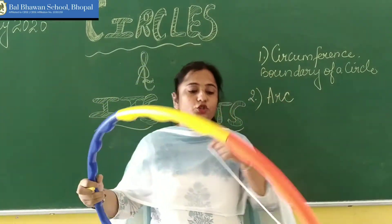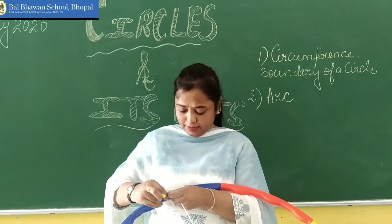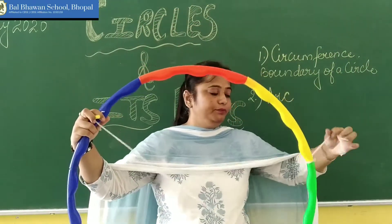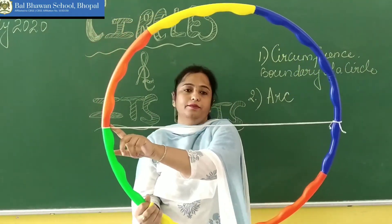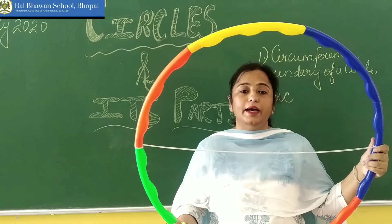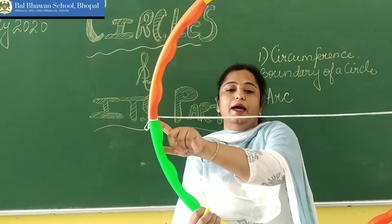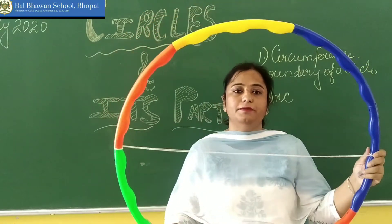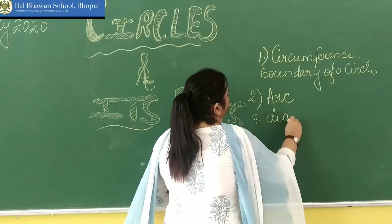Now what if I join a thread from one side to another of this circle? Let me join it. When I join this thread from one side of a circle to another, crossing the centre of the circle, it is known as the diameter. A line drawn from one side of a circle crossing the centre and joining the other part of a circle is known as the diameter. So our third part is the diameter.